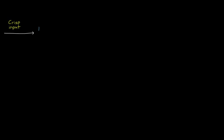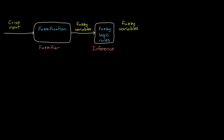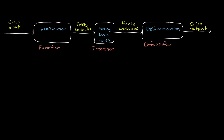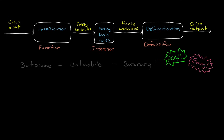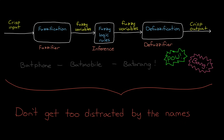With fuzzy logic, crisp inputs with precise values like a very specific credit rating are converted to fuzzy variables in a process called fuzzification. The fuzzy logic rules can then be applied to these fuzzified variables to create new fuzzy numbers. And finally, these fuzzy numbers can be converted back to crisp, specific outputs in a process called defuzzification. The word fuzzy gets put into everything — it's a bit like the Batman universe where common items just get appended with the word bat, like bat phone and batmobile and batarang. But don't get too distracted; we're going to walk through them, and despite the interesting names, this is all very intuitive.